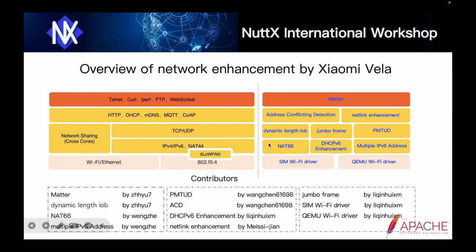This is the overview picture of the network enhancements. In the driver layer, we have implemented Wi-Fi driver for both QMU and SIM. In the TCP/IP layer, we have expanded several IPv6 capabilities such as Net66, DHCPv6 enhancement, and multiple IP address support. We also implemented support for Dynamic Lens ILB and Jumbo frames.